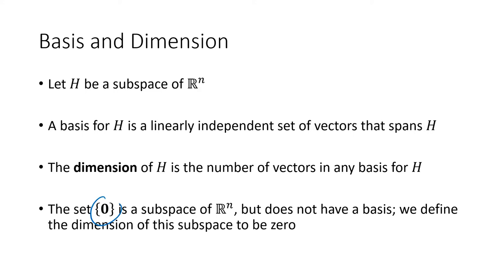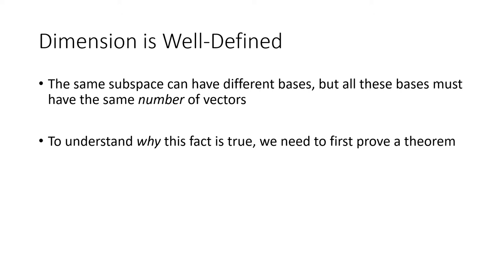There's a special subspace — the zero subspace — which only contains the zero vector. There's no basis for that subspace, so the dimension of that subspace is zero. One thing assumed by the definition of dimension is that two different bases of the same subspace have to have the same number of vectors. It turns out that any basis for a subspace, no matter what basis it is, they all have to have the same number of vectors.